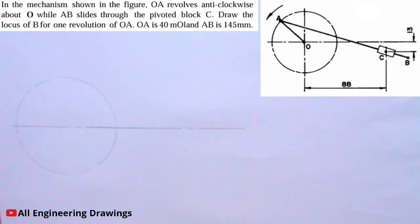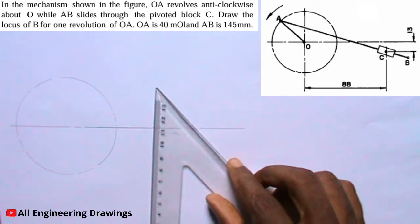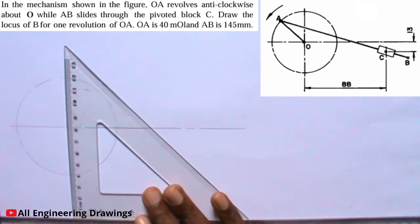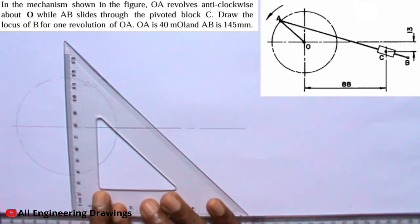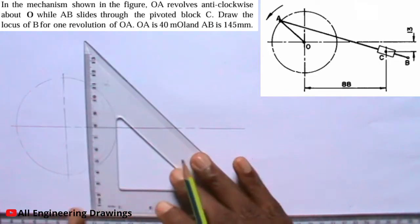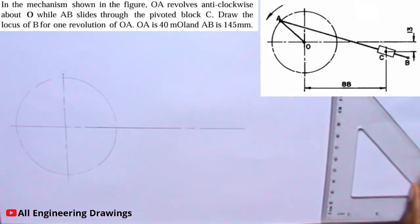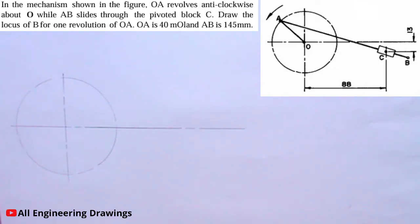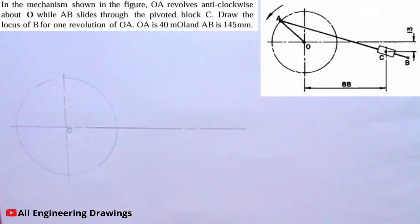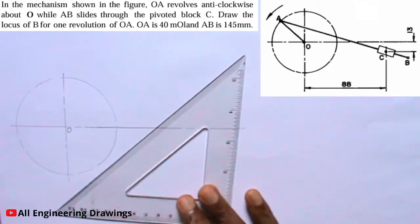Next, I will draw a vertical line passing through the center of the circle. I will label the center of the circle O. Now, using my 45 degree set square, I will divide the circle into 8 equal parts.